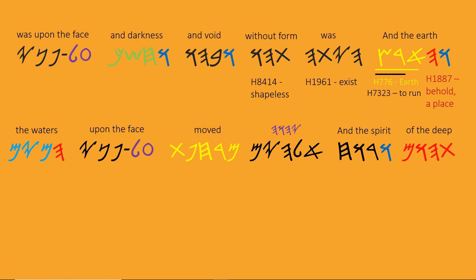Tohu means 'to be shapeless.' Bohu — with 'ba' at the beginning, which is the letter Beth meaning 'to be hollow' or 'to be empty.' So the earth was shapeless and empty. Moving forward: darkness — 'choshek.' 'El' means 'to go up, to ascend, to rise.' 'Panya' or 'pan' means face, or in this case surface, because it refers to an inanimate object. And then 'of the deep.'